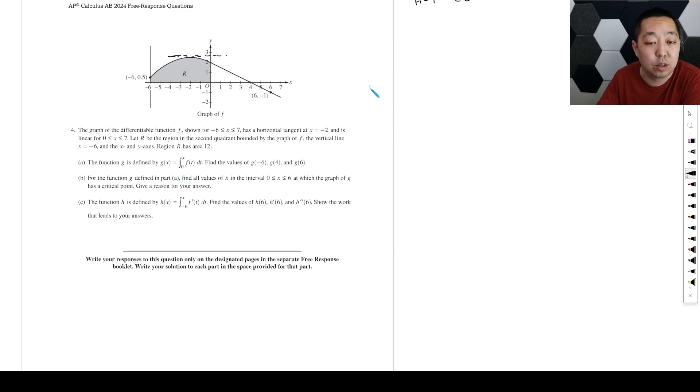So first part is we're literally just going to do G of negative six, which means we're just going to plug that into there. So it's zero to negative six of F of T dt. When I'm looking at area, I'm always going to switch the bounds, go left to right. So negative integral from negative six to zero, F of T dt. I want the area from negative six to zero. That has an area of 12. So this becomes negative 12.